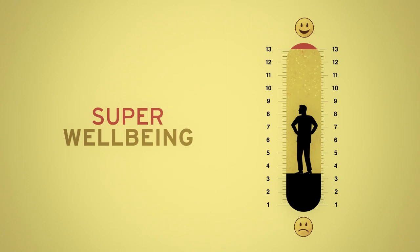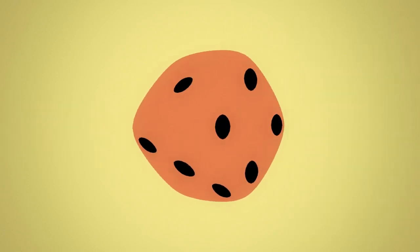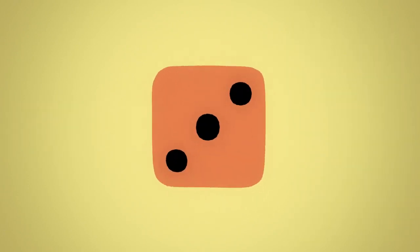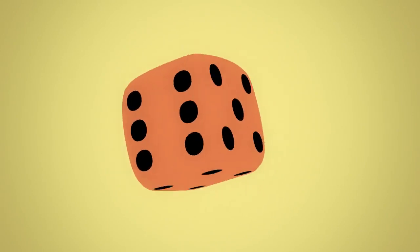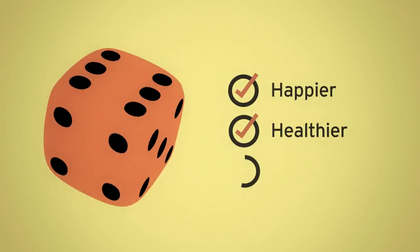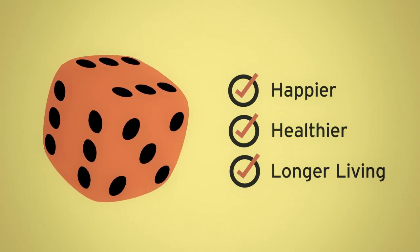At present, every child is a roll of the genetic dice. Pearce argues that the least we can do is load the dice in our favor to create happier, healthier, longer living humans.